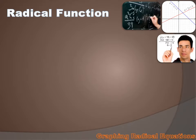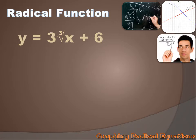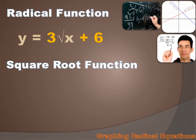A radical function is just a function with a radical in it. All it needs to be a radical function is a radical. Everything else — for instance, the 3, the cube, the plus 6 — they're not necessary to make this a radical function. I could get rid of the cube sign here and make this a square root function.